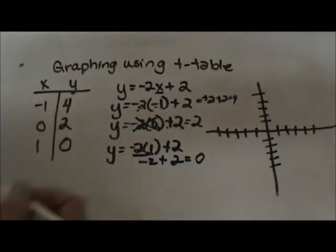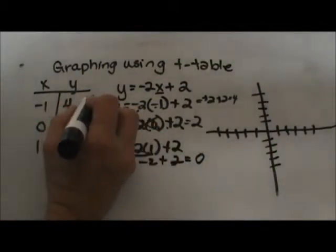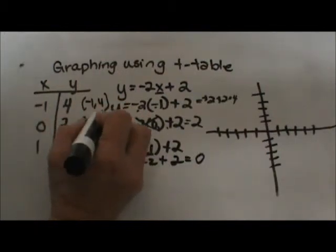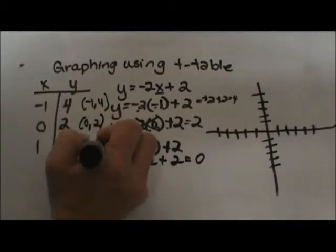Now over here in my t-table, I've actually created three ordered pairs: negative 1, positive 4; zero, 2; and 1, 0.